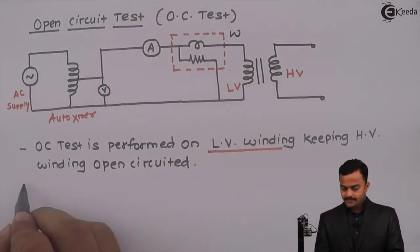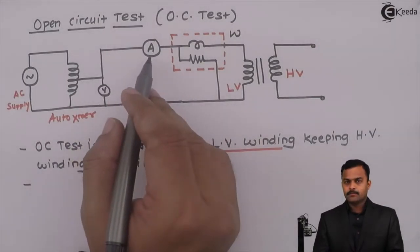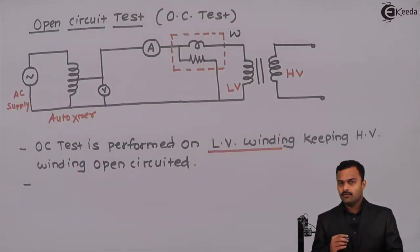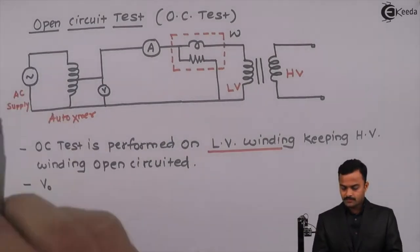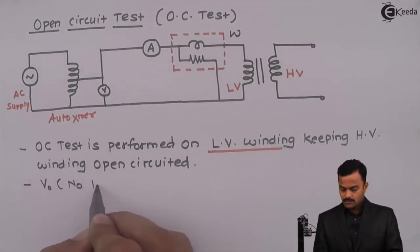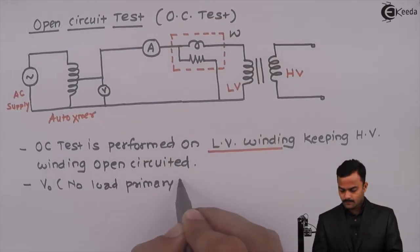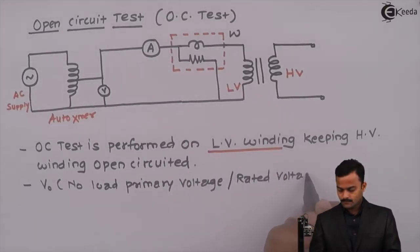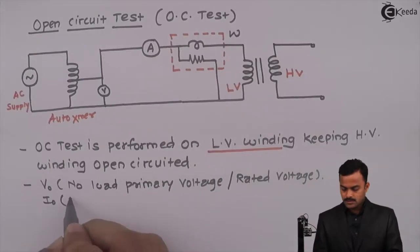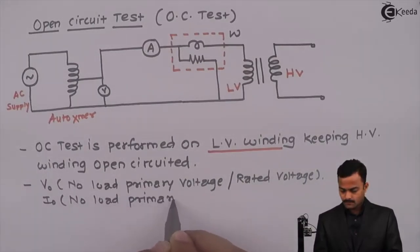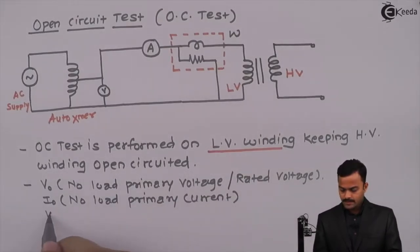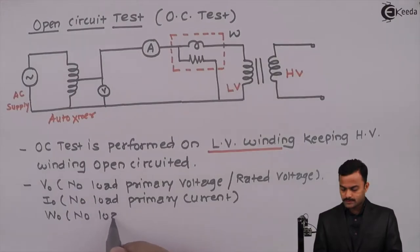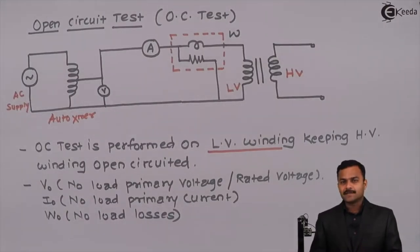The current measured by the ammeter is I0. I will list out all the voltage, current, and wattage. V0 is the voltage, which we call the no-load primary voltage — it will be the rated voltage for the low voltage side. I0 is the no-load primary current, and W0 is the power measured by the wattmeter, which we call no-load losses, or core losses.